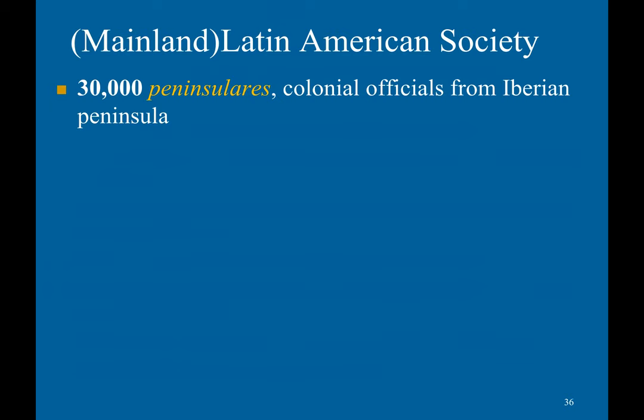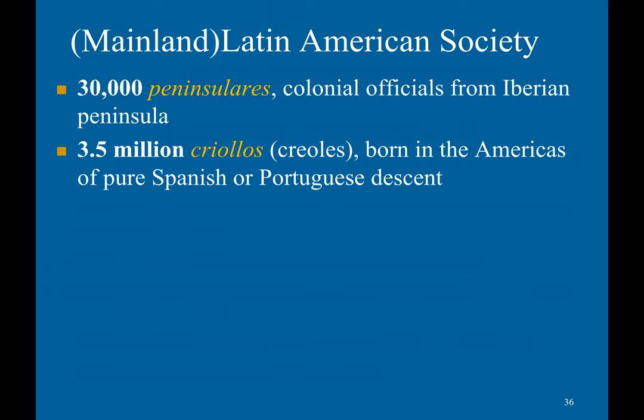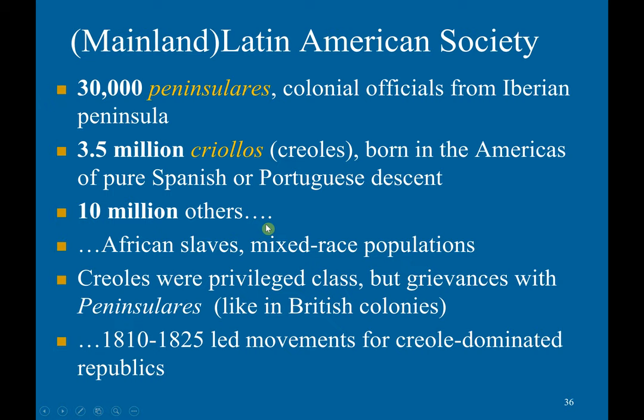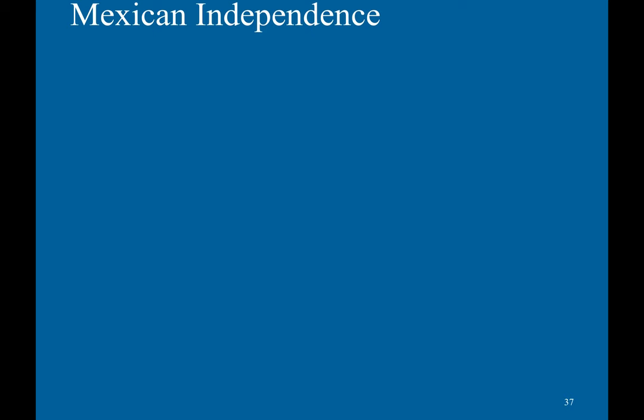In mainland Latin America, there were 30,000 peninsulares — colonial officials from the Iberian Peninsula. Below them were 3.5 million creoles, born in the Americas of pure Spanish and Portuguese descent, with 10 million others including African slaves and mixed-race populations. The creoles were a privileged class but had grievances with the peninsulares — just like the British colonies, where American-born British were not treated equally as British-born officials. Napoleon's invasion of Spain and Portugal in 1807 weakened the rule over the colonies.